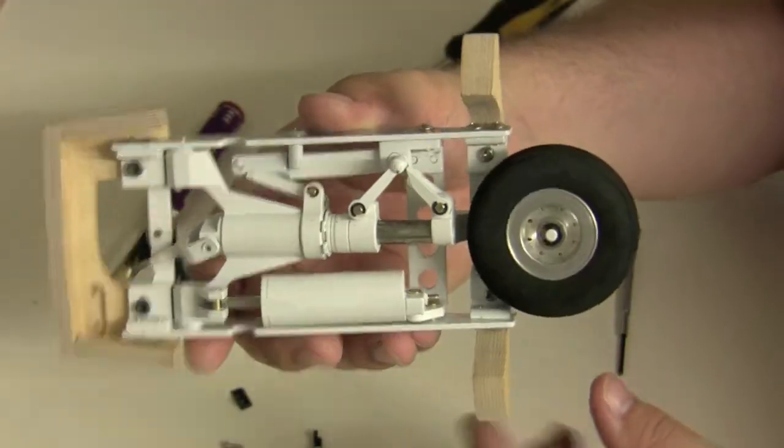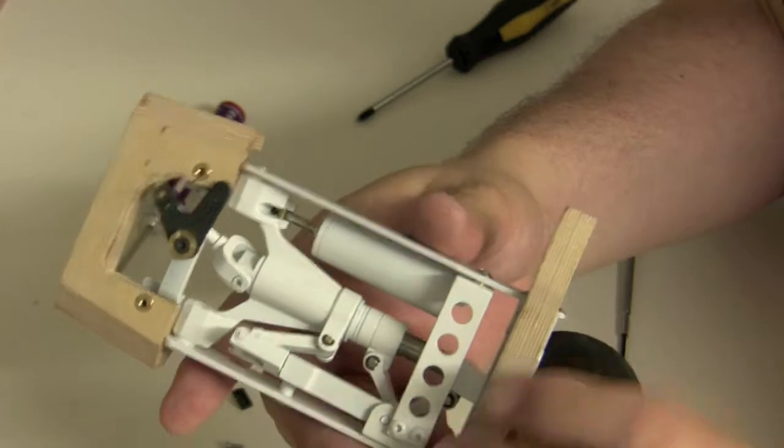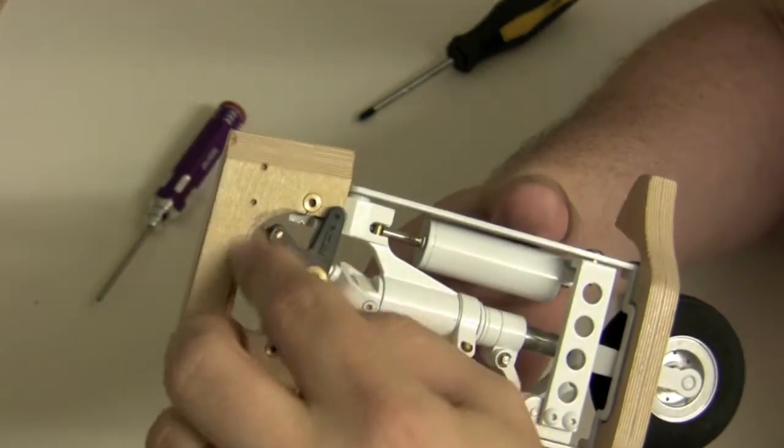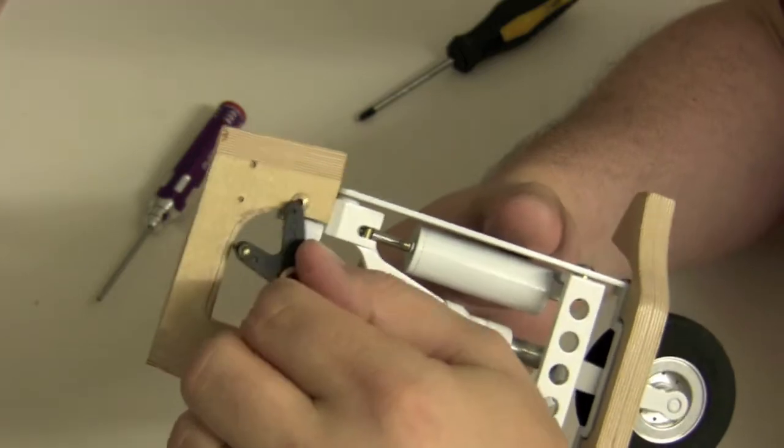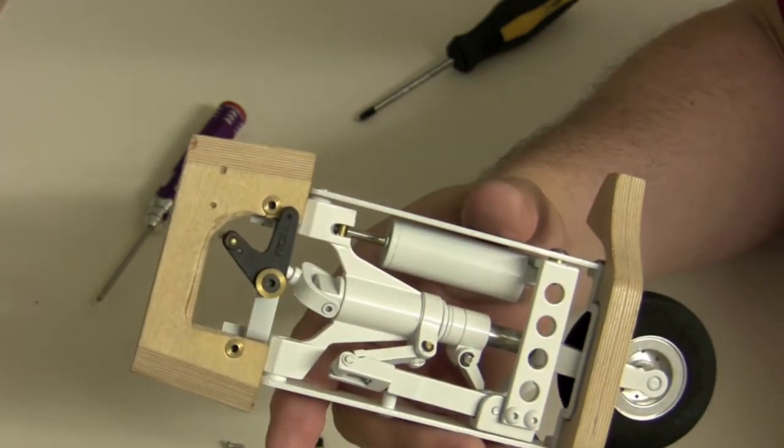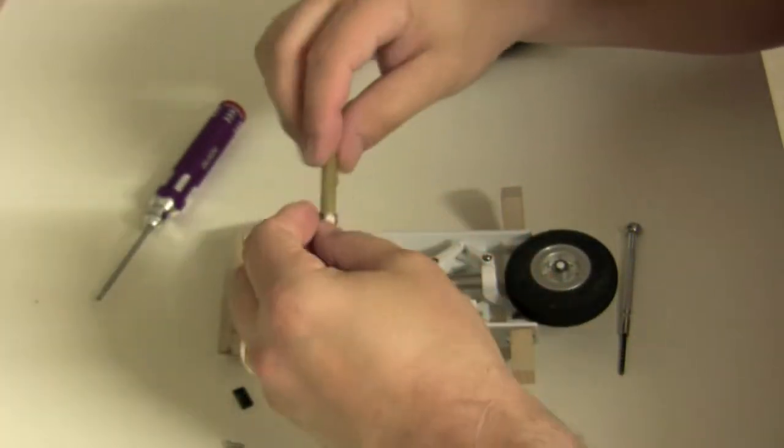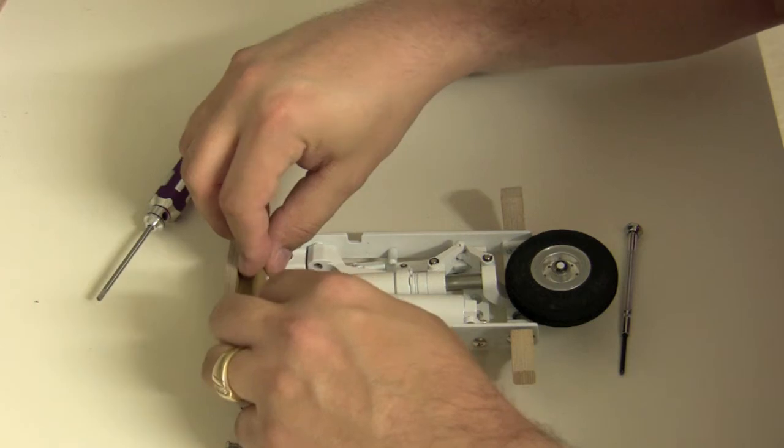All right, so that's the landing gear on the landing gear mounts. This is the side that will be up inside the fuselage and here's our wheel control for the nose gear there. So that's how that looks. And now let's put in our cylinder here.